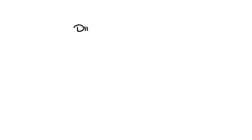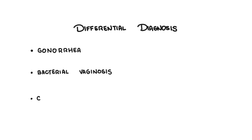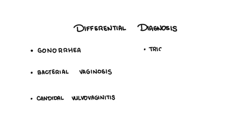The differential diagnosis for chlamydia includes other sexually transmitted infections, including gonorrhea caused by Neisseria gonorrhoeae, bacterial vaginosis, candidal vulvovaginitis which is a yeast infection of the vagina, trichomoniasis which is a common STI caused by a parasite, and pelvic inflammatory disease.